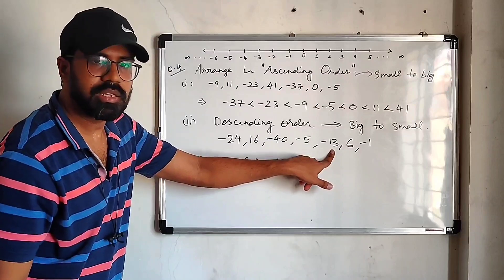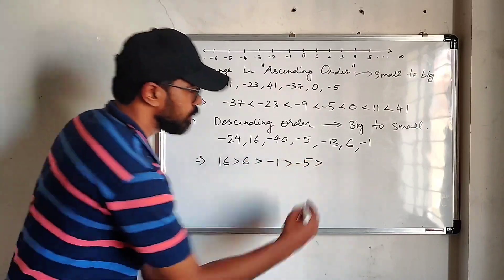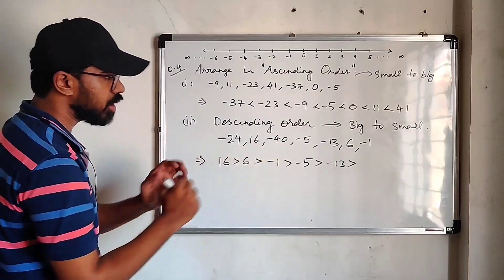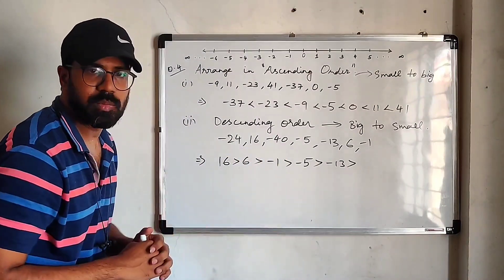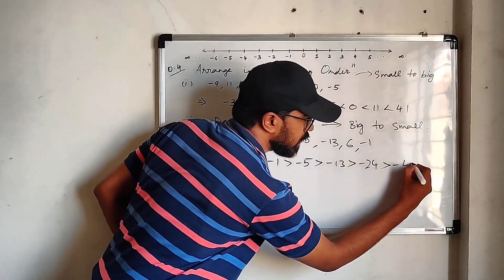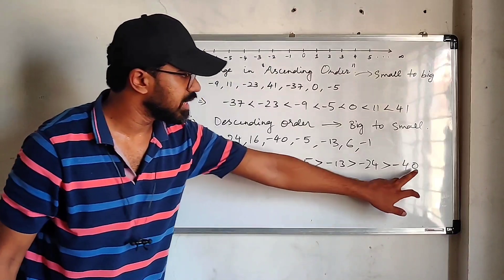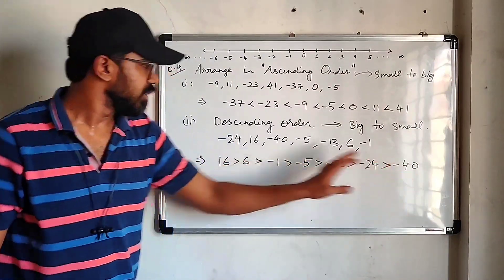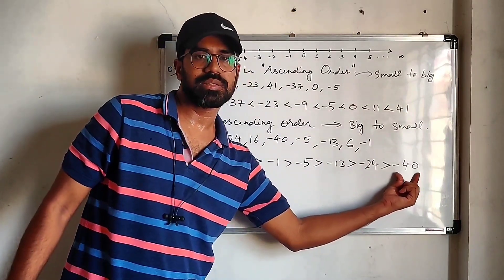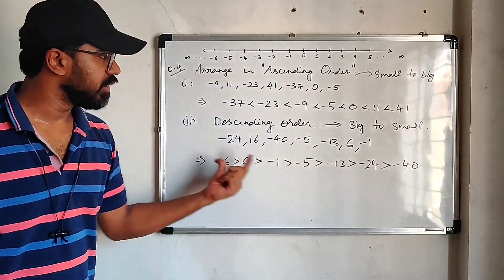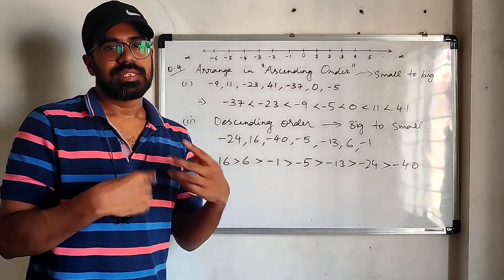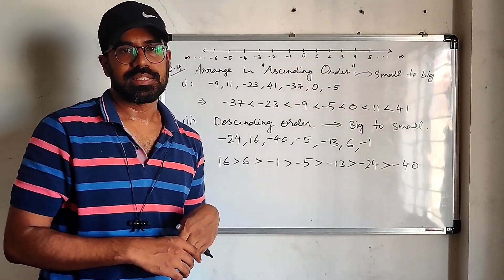Comparing minus 24 and minus 40: ignoring the sign, 40 is bigger, so minus 40 is the smallest of all the given integers. Therefore in descending order: 16, 6, minus 1, minus 5, minus 13, minus 24, minus 40. I hope you are clear with this. Soon we will see the next topics and move on to exercise 1b. Thank you.